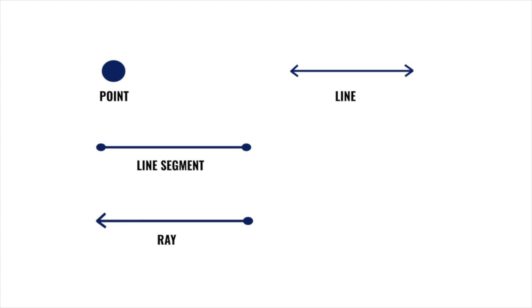The next one is called a line. Notice that a line has arrows on both ends, showing that it is a straight path that goes on and on forever in both directions.